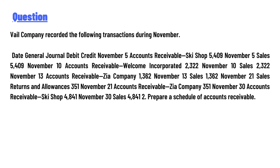Well Company recorded the following transactions during November. General journal — debit and credit. November 5: Account Receivable, Sky Shop — debit 5,054.09. November 5: Sales — credit 65,409. Number 10: Account Receivable, Welcome and Corporate — debit 23 total. Number 10: Sales — credit 2,322. Number 13: Account Receivable, The Company — debit 1,362.